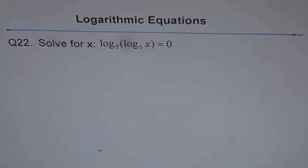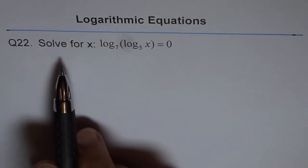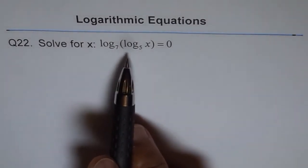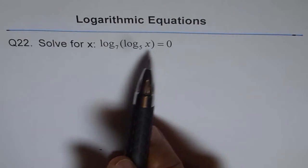Logarithmic equations, question 22. Solve for x: log to the base 7 of log to the base 5 of x equals 0.